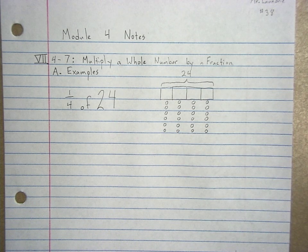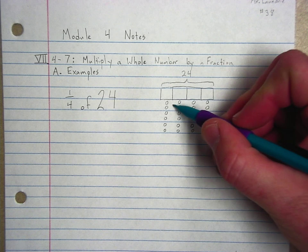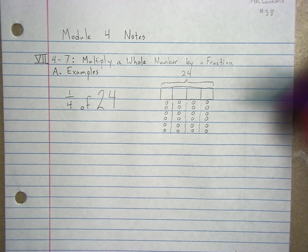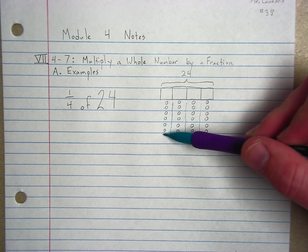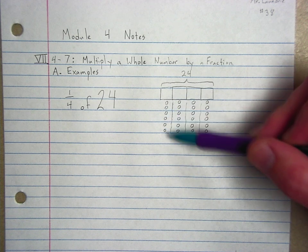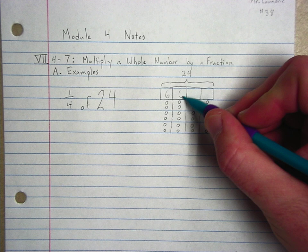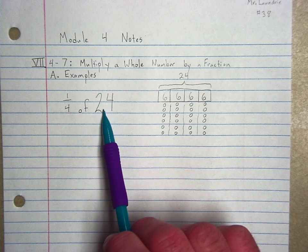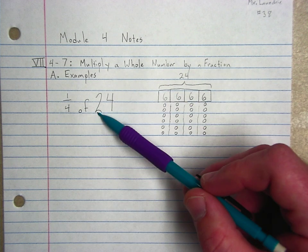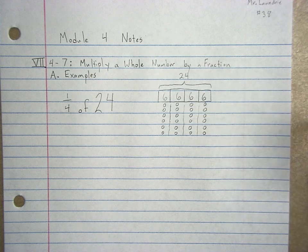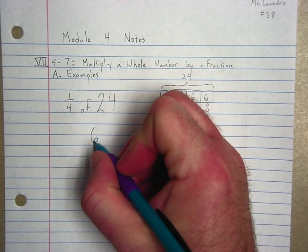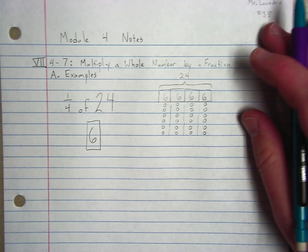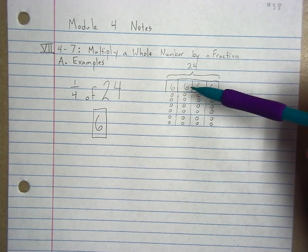You can see why that's not the way we're going to want to do this most of the time. But it is a good visual because if I draw a little squiggly line down here to show the columns, you can very clearly see how many are in each column. 1, 2, 3, 4, 5, 6, 6, 6, and 6. So what is 1 fourth of 24? Well, 1 fourth of 24 is going to be 6. So for this example, 6 is my answer. Again, just combining what we've been doing.